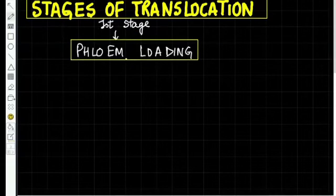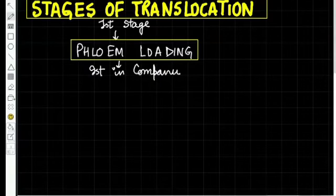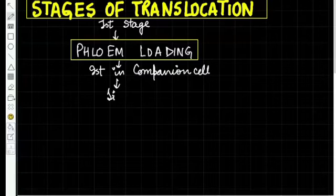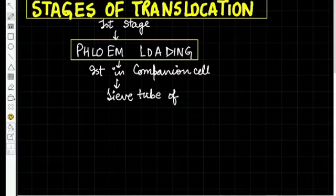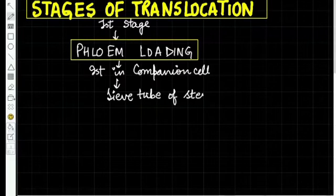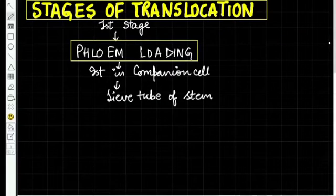Whenever solute particles cross the living part of the cell, that pathway is called the symplast pathway, and all symplast pathways require energy. Therefore it's an active process. Once sugar molecules enter the companion cells, they are ready to enter the sieve tube by diffusion. Up till here, sugar from leaf to companion cell to sieve tube, this process is called phloem loading.